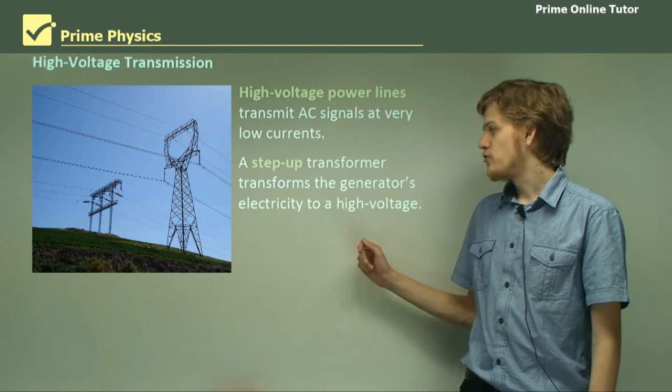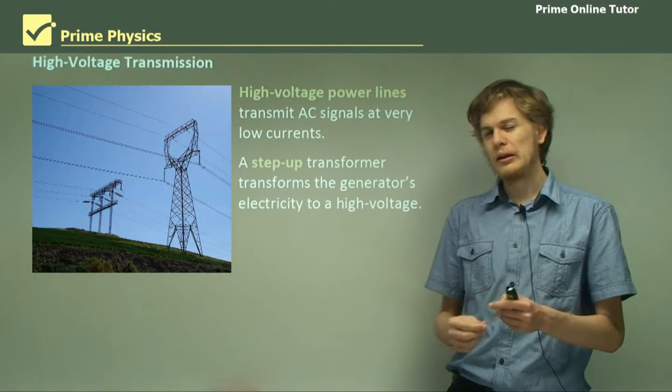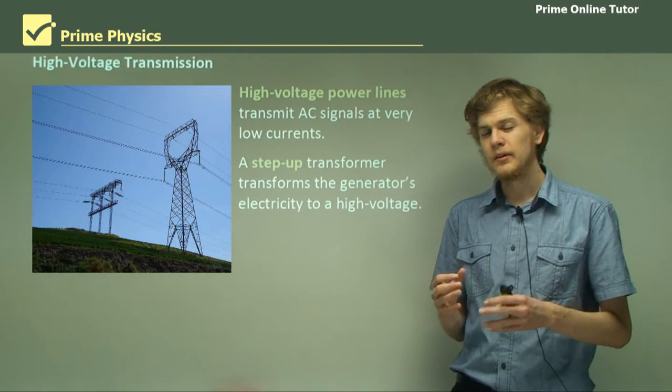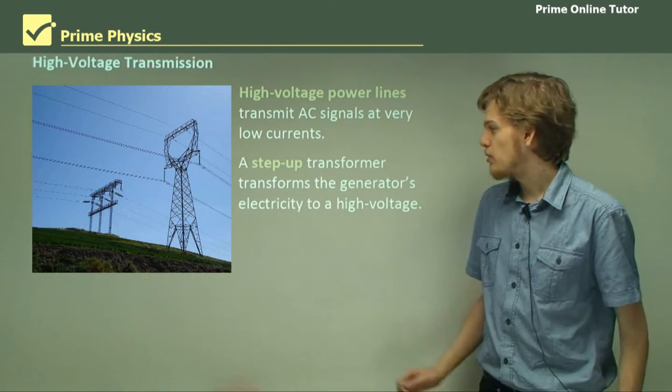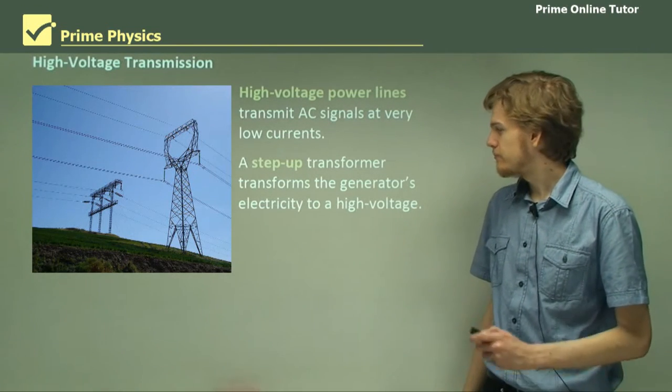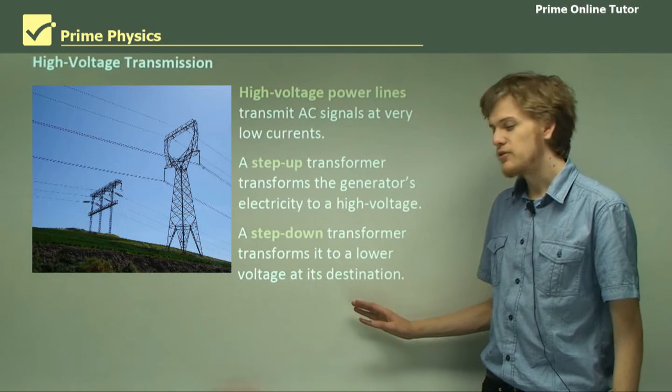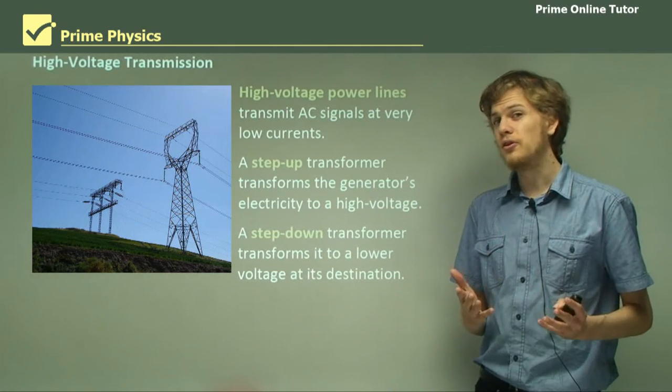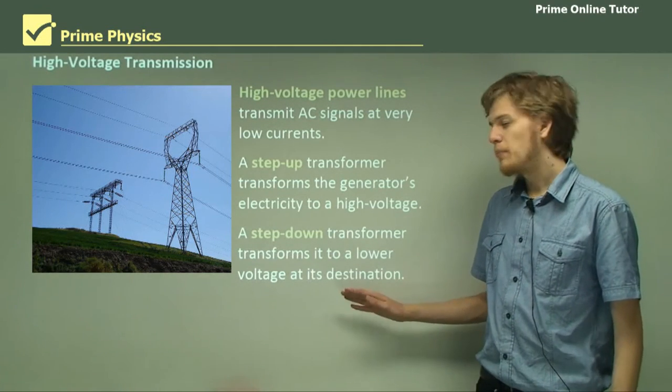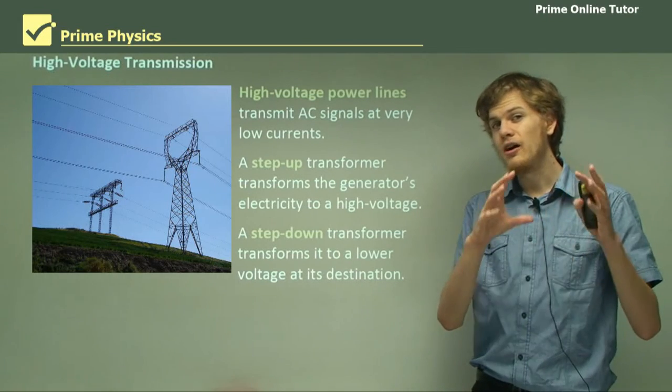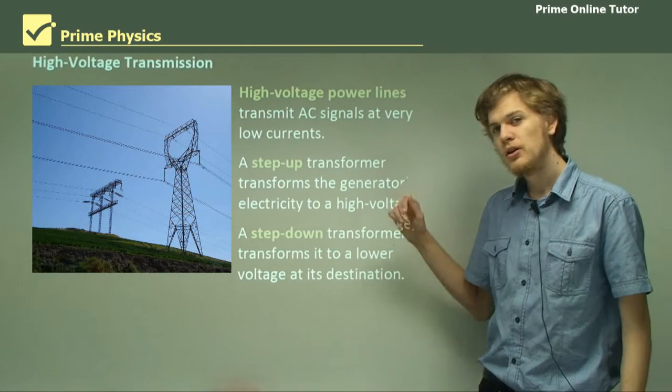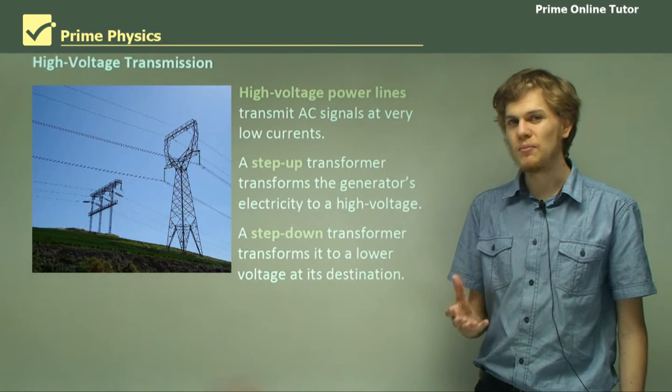A step up transformer will transform the electricity from the generator into a very high voltage signal that is sent through these power lines. A step down transformer set up at the other end of the wire will step down the very high voltage stuff in the power line to a lower voltage that can actually be used for something.